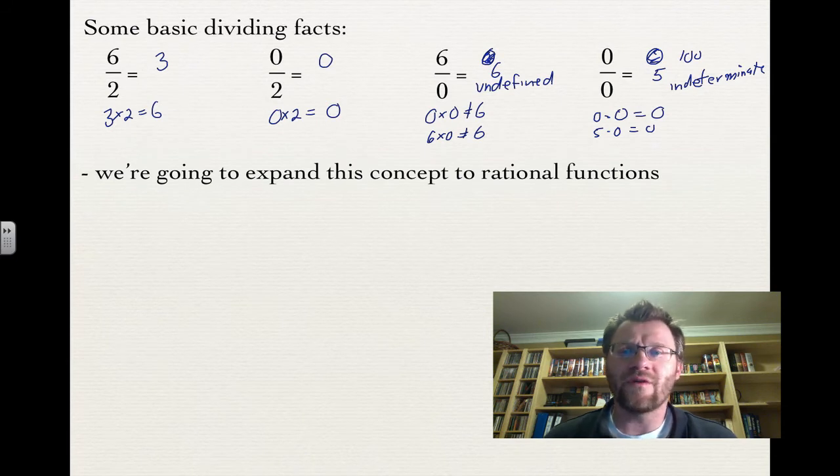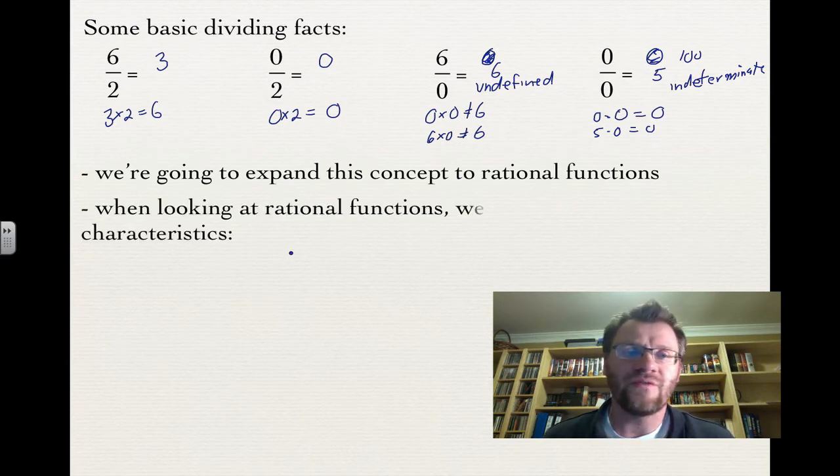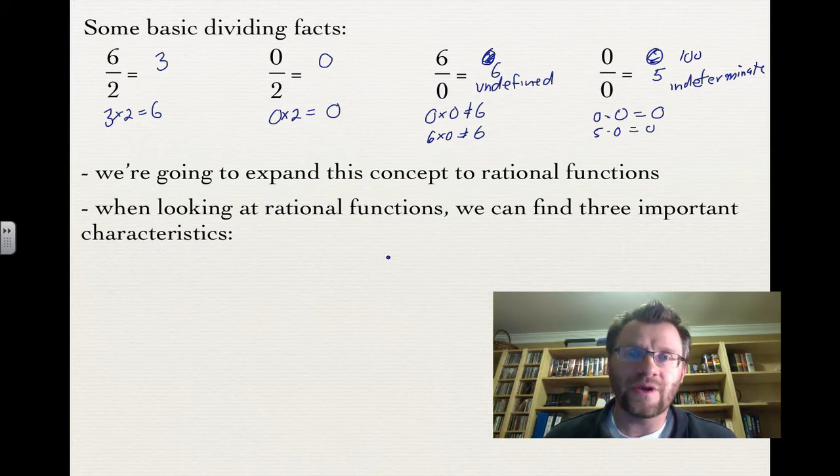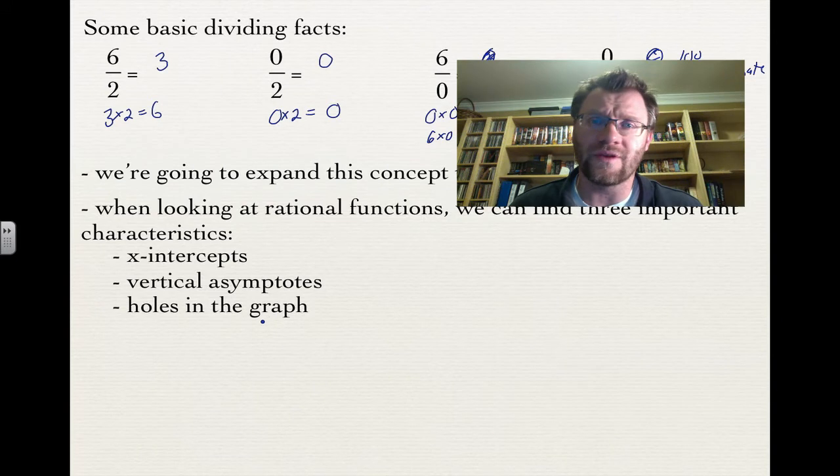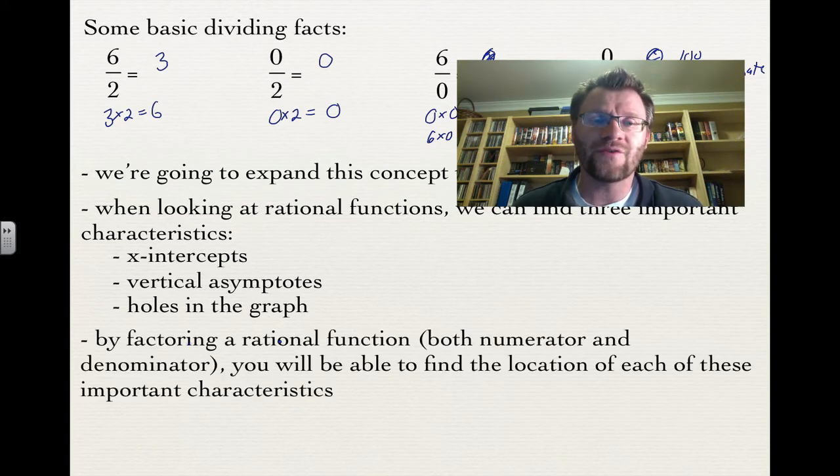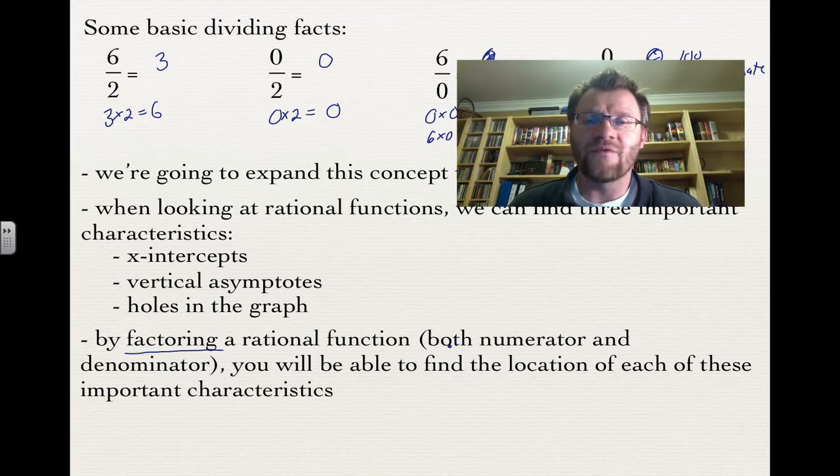So we're going to expand this dividing concept to rational functions. When we're looking at rational functions, we can find three important characteristics. First, x-intercepts. Second, vertical asymptotes. And third, holes in the graph. By factoring a rational function, if you factor both the numerator and denominator, you'll be able to find the location of each of these important characteristics.